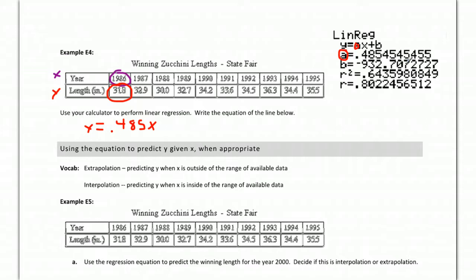And then the b right here, the b plus b, is also defined for us. It's a number plus negative 932.7, so I would actually just write minus 932.7. We can go ahead and go to three decimals just to be consistent here.